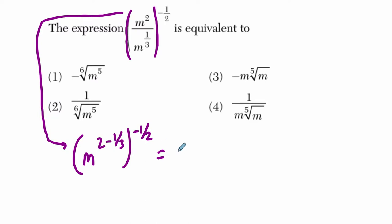And two minus a third is really just five-thirds, because two is six-thirds minus one-third which equals five-thirds. So we have m to the five-thirds power, and then that is to the negative one-half. Then we just multiply these two exponents.